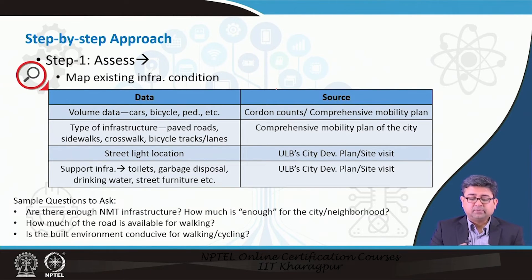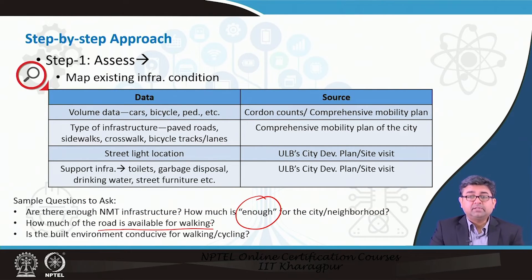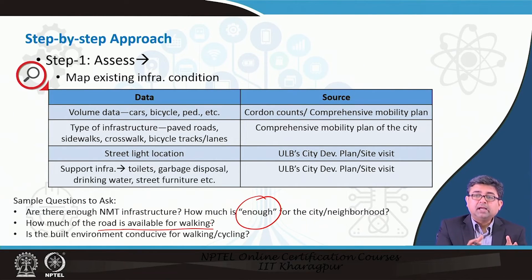We ask three simple questions: Are there enough NMT infrastructure — and how do you define 'enough'? How much of the road is actually available for walking? There may be a lot of road space, but how much percentage of the right-of-way is actually available for walking? In many Indian cities, the walking space is usually encroached upon by hawkers, parked vehicles, utility lines, and so on, even though it is demarcated.